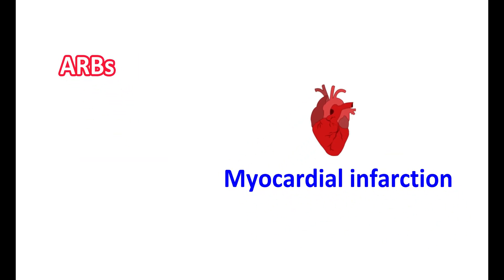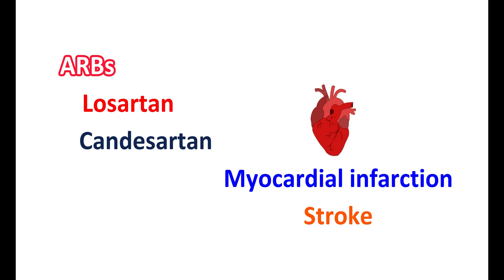Another use of ARBs is in the treatment of myocardial infarction and prevention of stroke. Myocardial infarction involves cardiac damage due to reduced blood flow or blockage of blood supply. ARBs can reduce the risk of stroke and heart failure and can be used in the prevention of myocardial infarction. However, not all sartans work similarly; particularly, medications like losartan and candesartan are used specifically for the prevention of myocardial infarction.